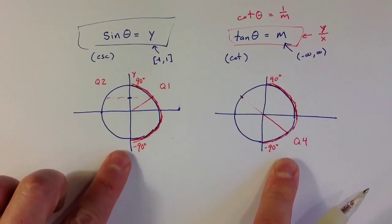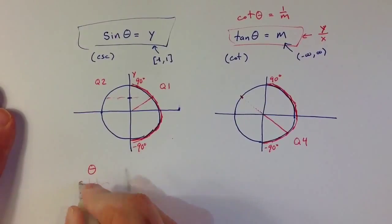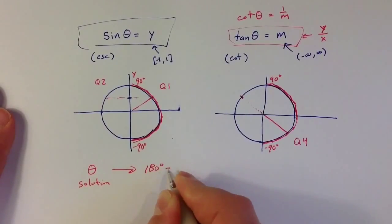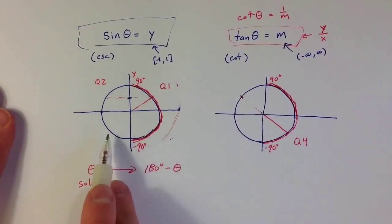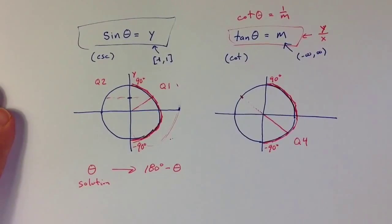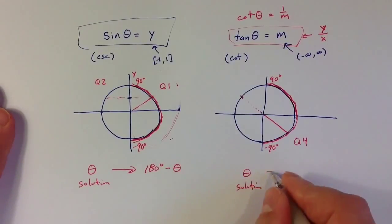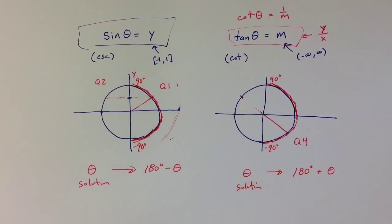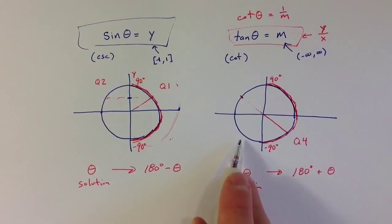Looking at these two situations: for sine, if theta is a solution, we get the other symmetric solution by taking 180 degrees minus theta — that moves us from quadrant 1 or 4 to quadrant 2 or 3 respectively. For tangent, if theta is a solution, the other solution comes from taking 180 degrees plus theta — moving from quadrant 4 to quadrant 2, or from quadrant 1 to quadrant 3.